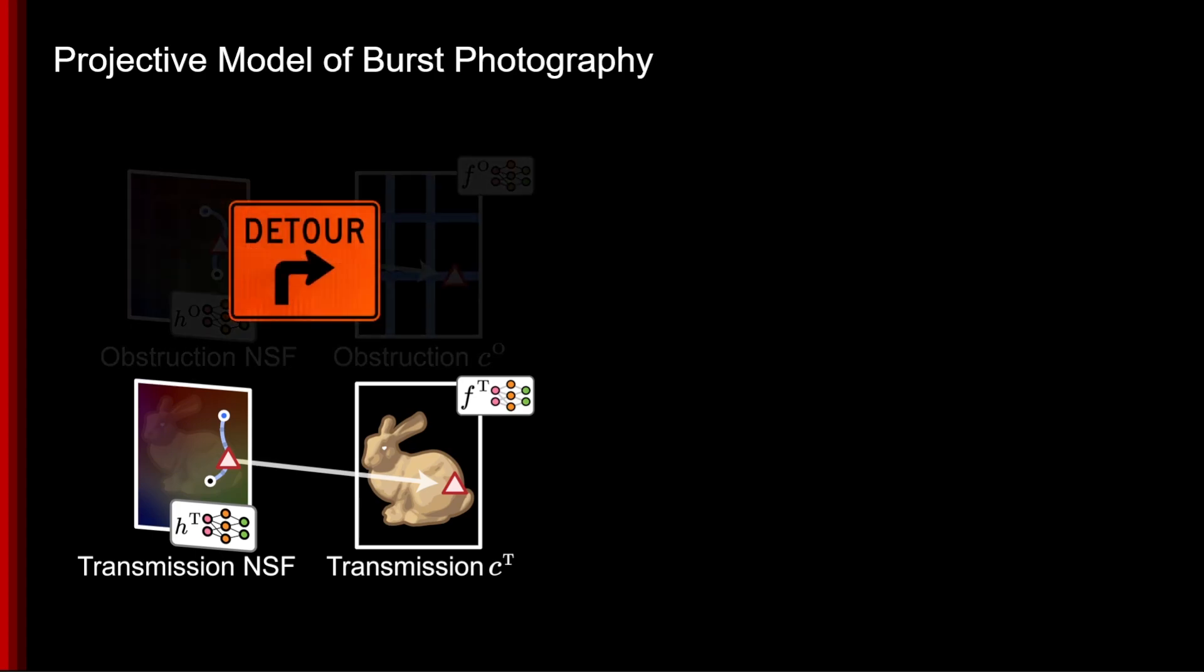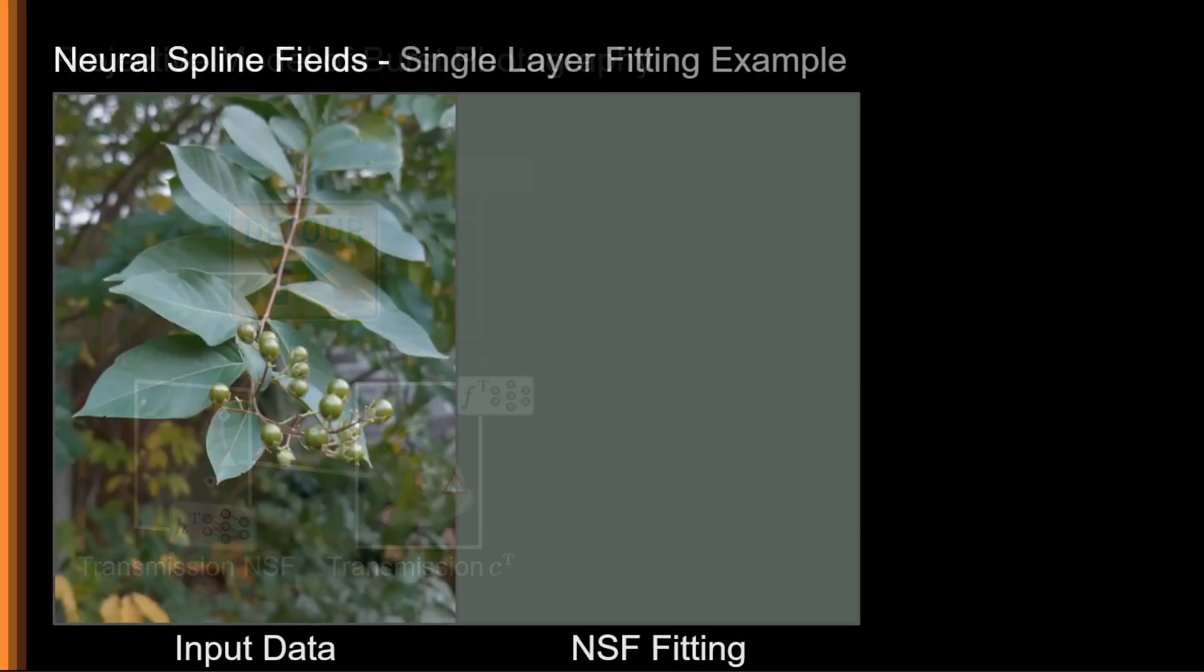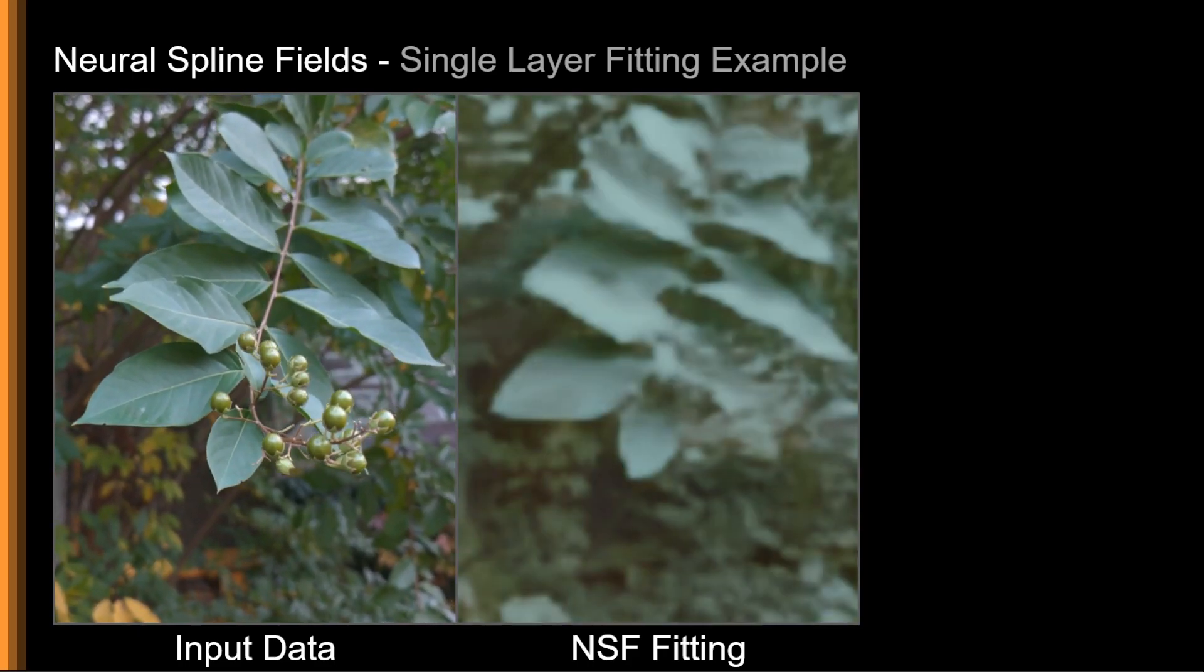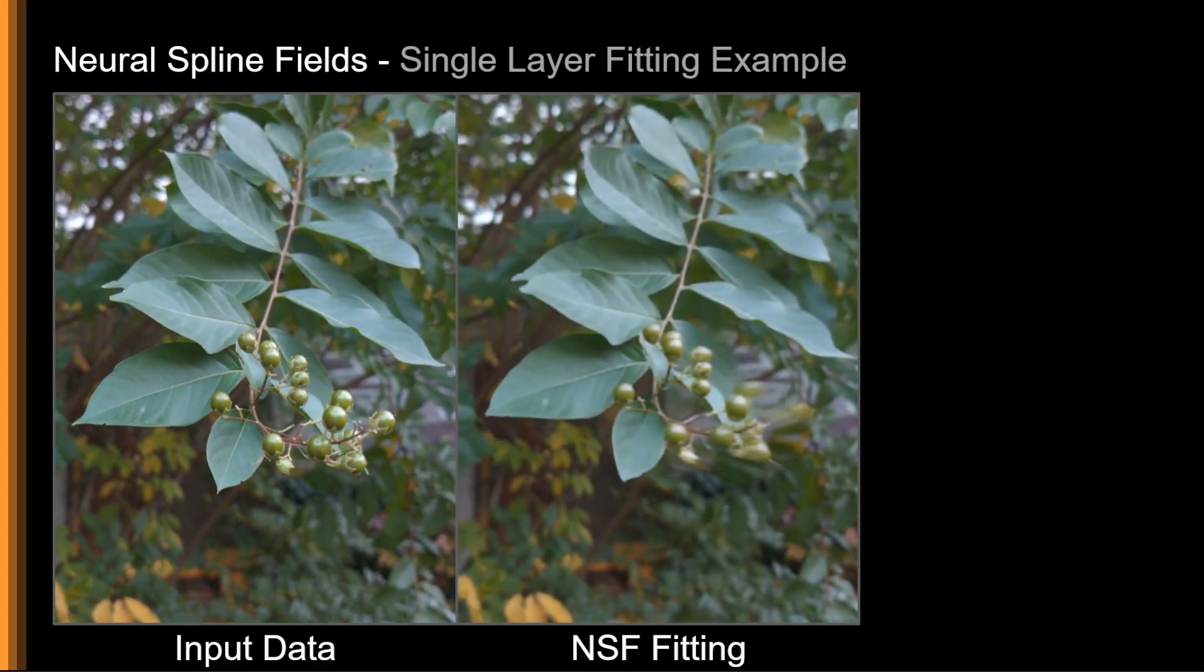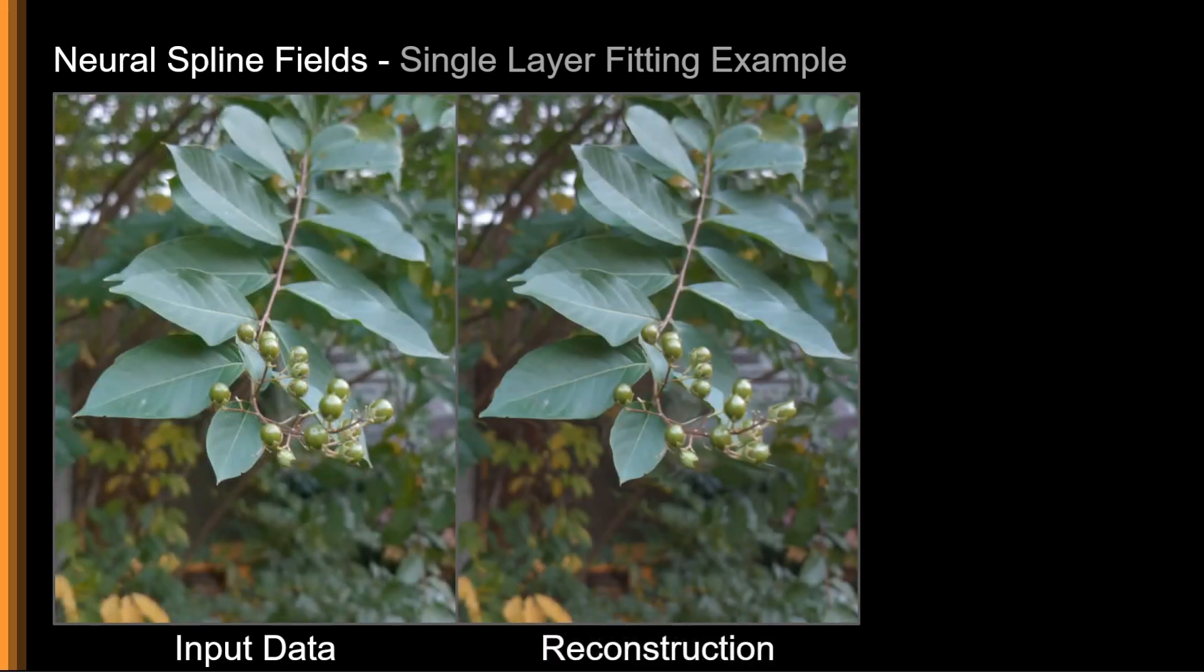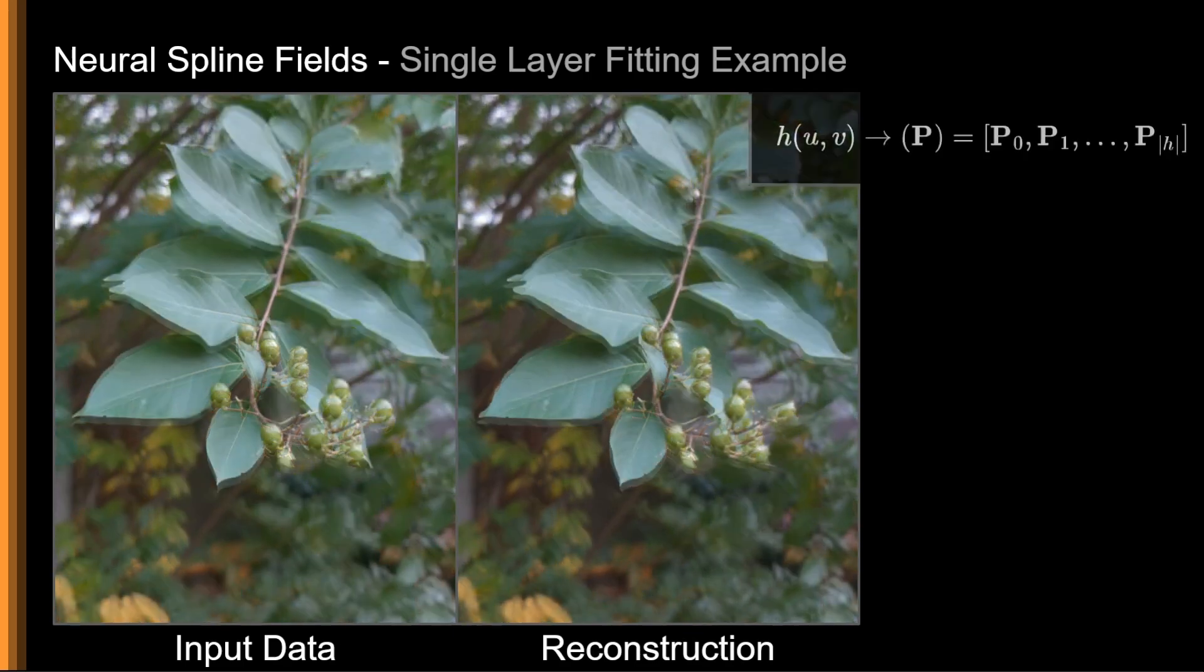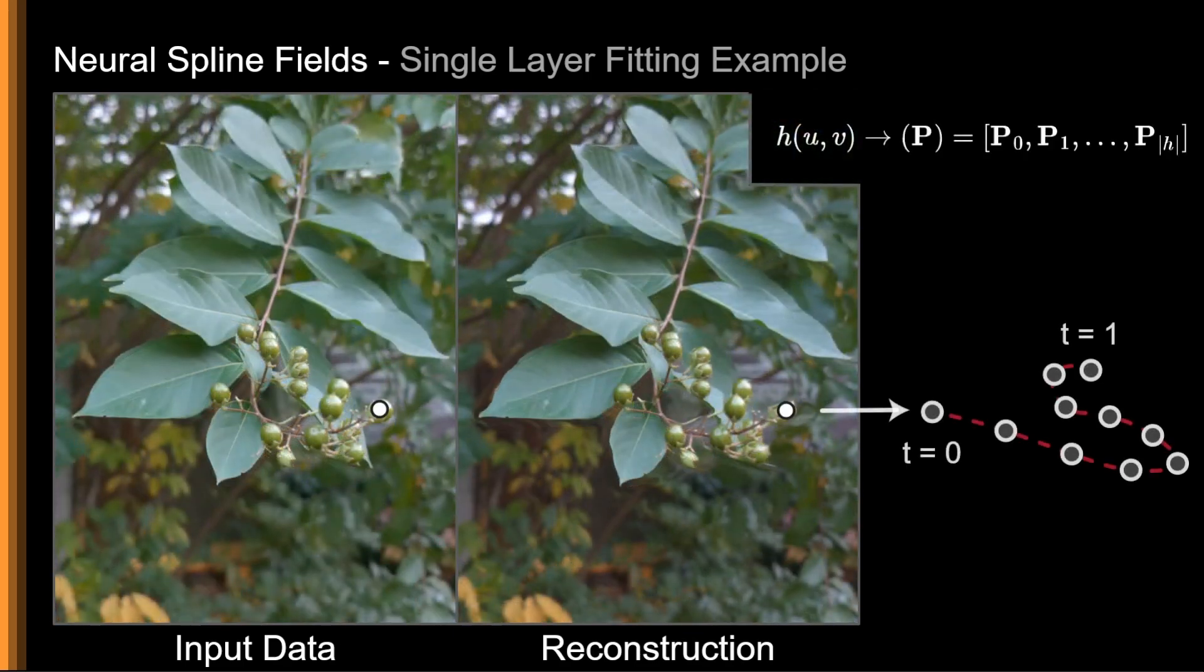Let's take a brief detour to see what a simplified version of this looks like for only one image layer. Fit to this video of a swinging tree branch, we see how during training the neural spline field learns to undo the scene motion. Playing it forward, we see how it smoothly warps space to match the motion of the original video, with each image coordinate mapped to a set of spline control points p representing its path over time.